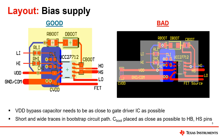Another consideration for the bias supplies to keep in mind is that you should use short and wide traces in the bootstrap circuit path. The path goes from the bypass capacitor up to the bootstrap resistor, bootstrap diode, and bootstrap capacitor. Using short and wide traces will help you minimize parasitic inductances on the VDD trace. You would also want the bootstrap capacitor placed as close as possible to the HB and HS pins.